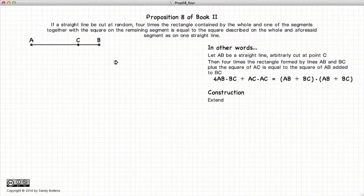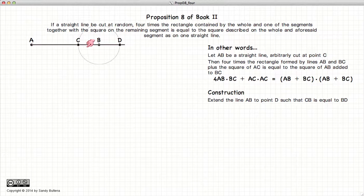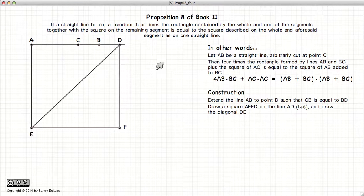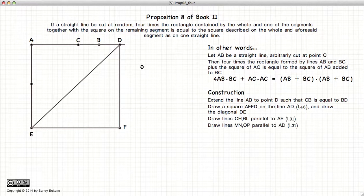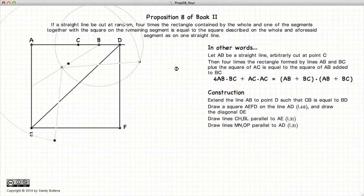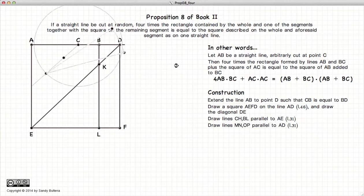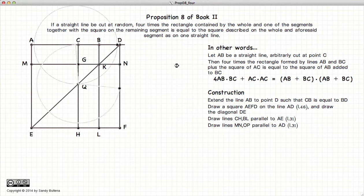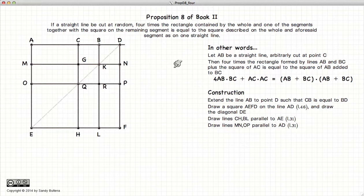So first things first, let's extend our line AB to the point D, such that CB is equal to BD, draw a square on AD, and start drawing our lines parallel from B and through the intersection points of the diagonal parallel to AD. Like usual, I won't describe them in detail because we've done this so many times before. And then we have our figure.